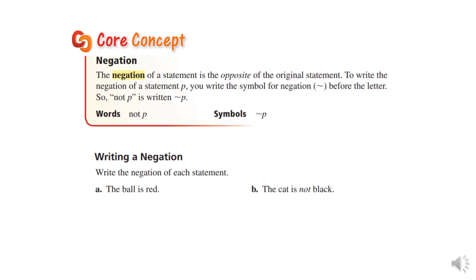A negation of a statement is the opposite of the original statement. To write the negation of a statement, you write the symbol for negation before the letter — so this means "not P." For example: the negation of "the ball is red" is "the ball is not red." The negation of "the cat is not black" is "the cat is black." If it's already negative, then it becomes positive. A negation is the opposite.